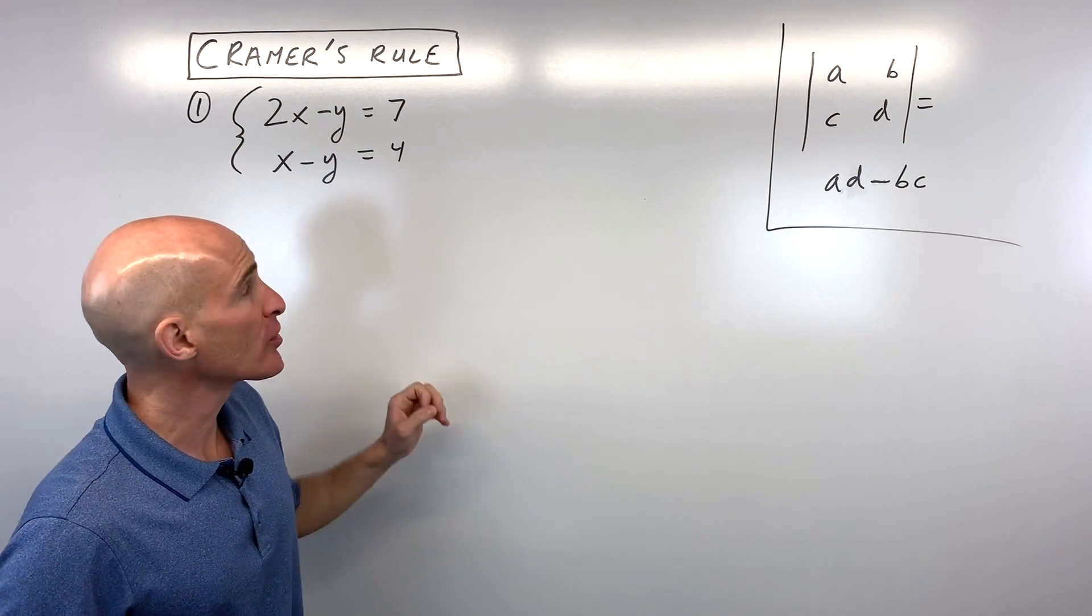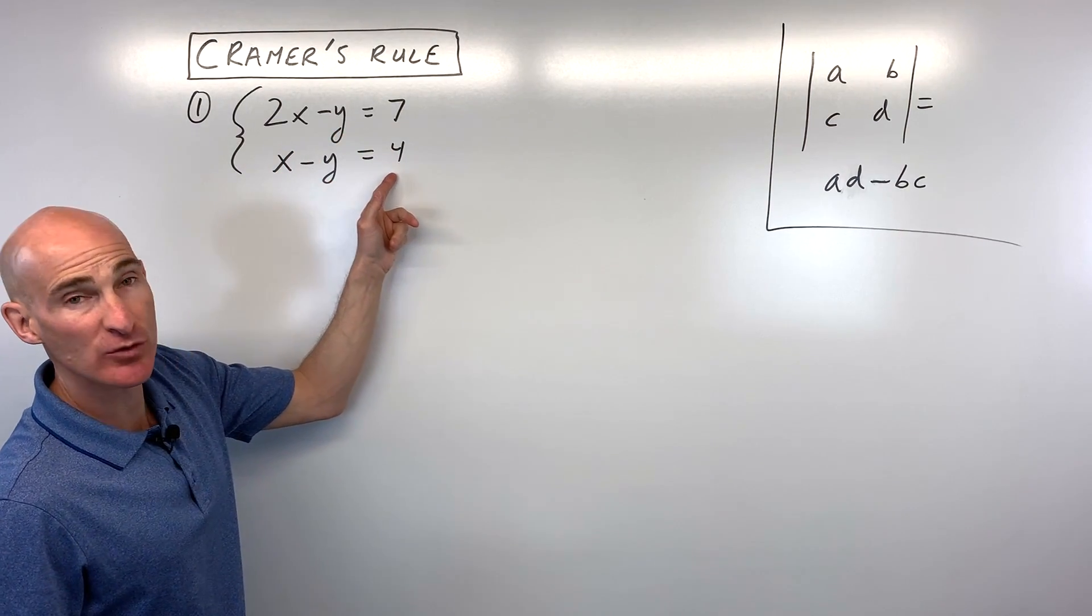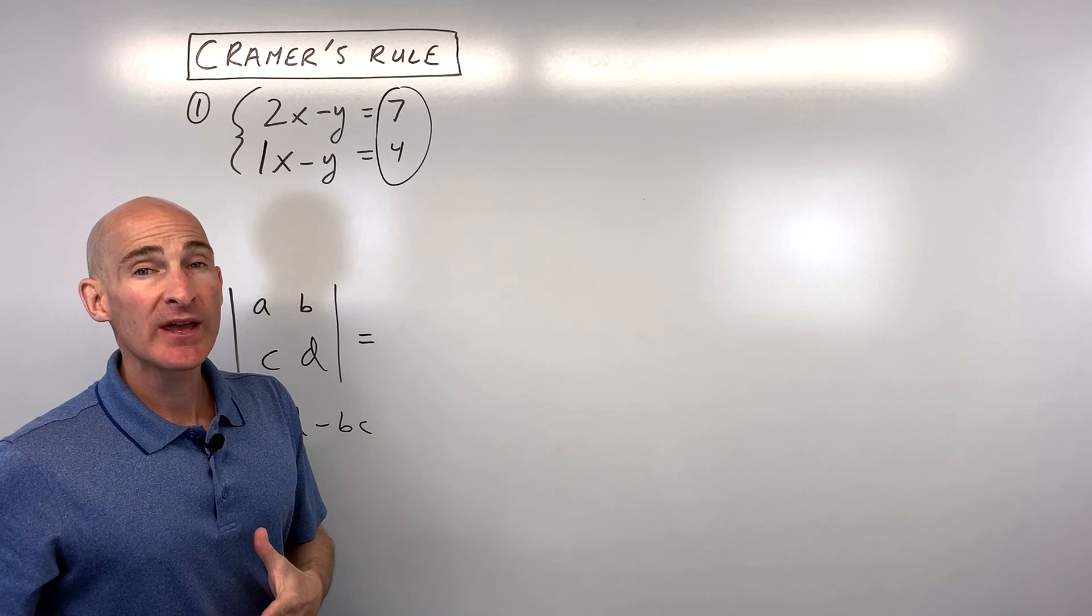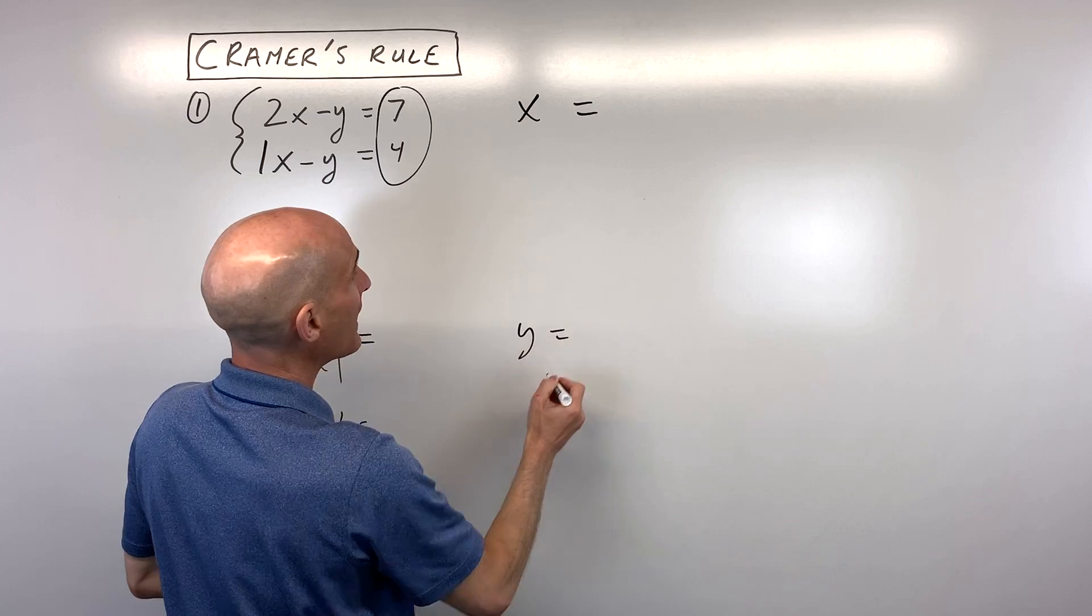So let me show you how to work through this with this example right here: 2x minus y equals 7, x minus y equals 4. Now an easy way to set this up is to go like this, x equals and y equals.